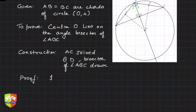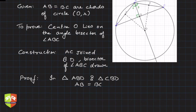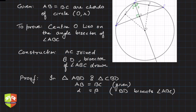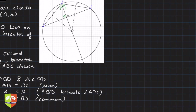In triangle ABD and triangle CBD: AB is equal to BC — given, as they are equal chords. Angle ABD (alpha) is equal to angle CBD (beta) because BD bisects angle ABC. And BD is equal to BD — common side. Therefore, triangle ABD is congruent to triangle CBD by the SAS (side-angle-side) criteria.